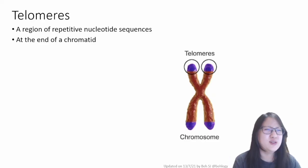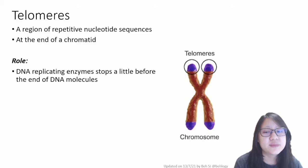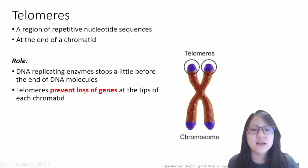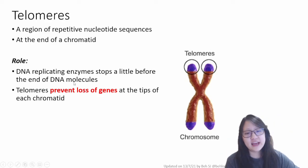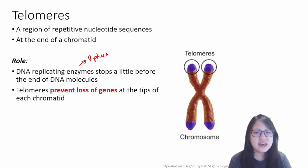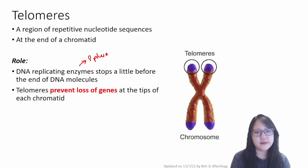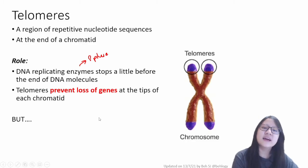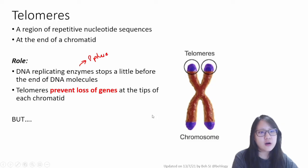You might think that they're useless — what do they do exactly if they don't code for anything? They actually play a protective role in preventing the loss of genes. DNA replicating enzymes during S phase actually stop a little before the end of the molecule, so they don't copy the entire length — they might miss one or two nucleotides especially at the end. Since telomeres don't code for anything, there are no genes in them, and they protect actual genes from being lost. However, by protecting other genes, they get shorter over time, and a few bases of telomeres are lost each cell cycle.